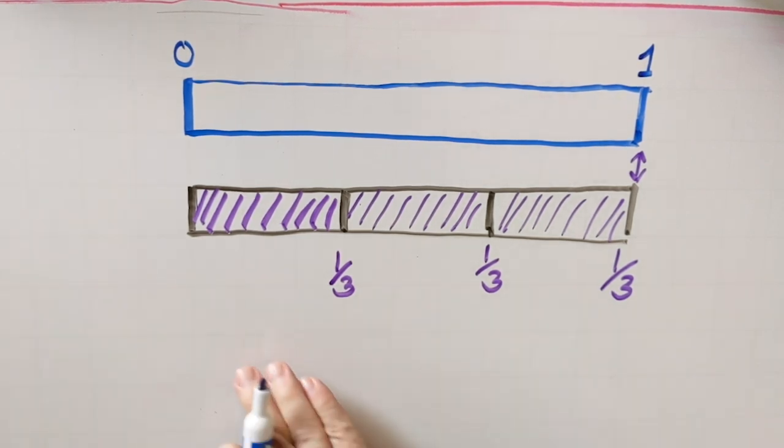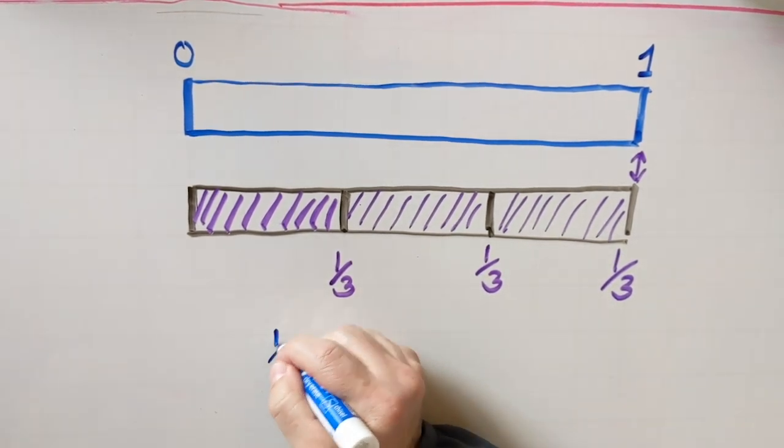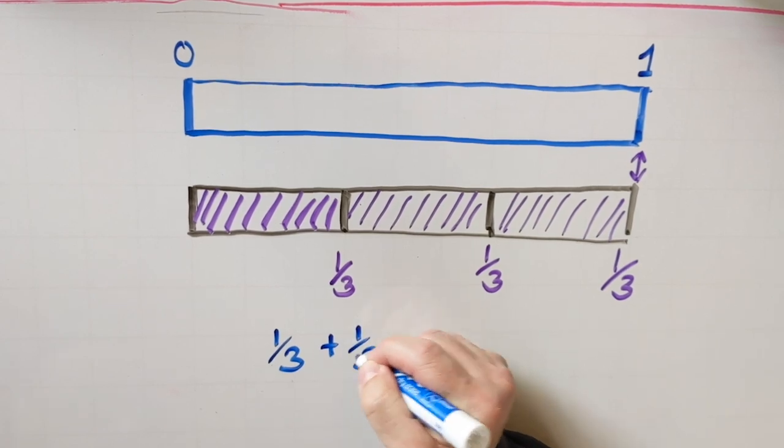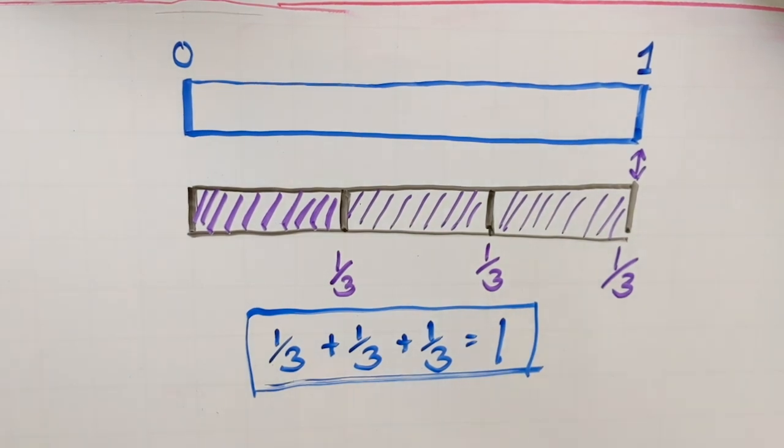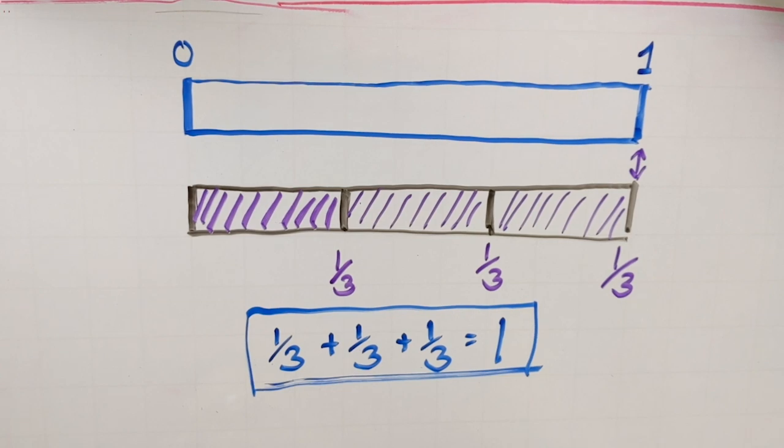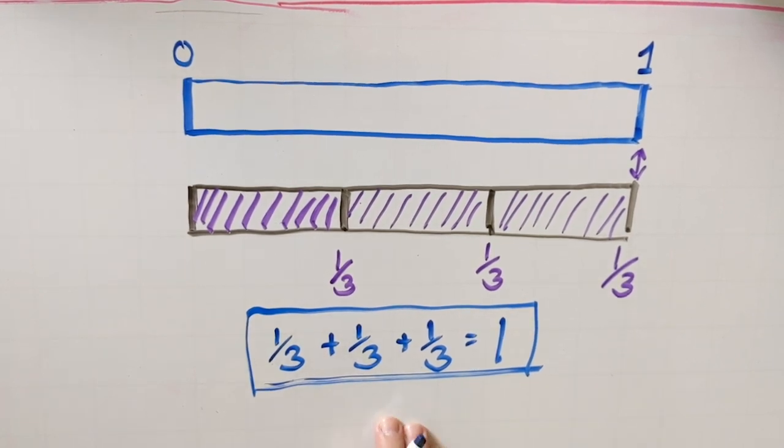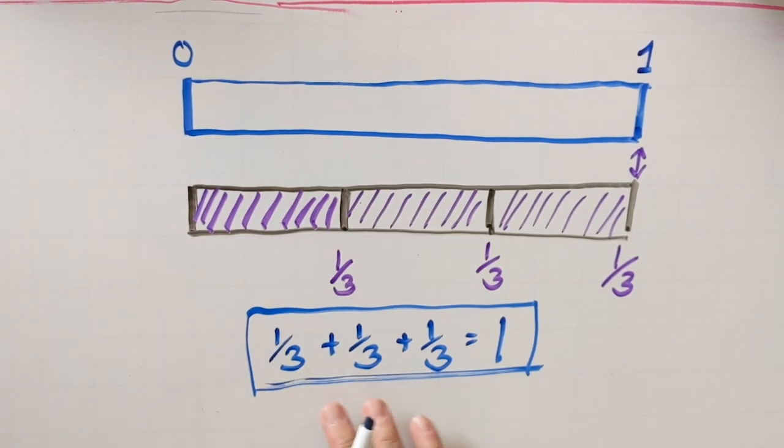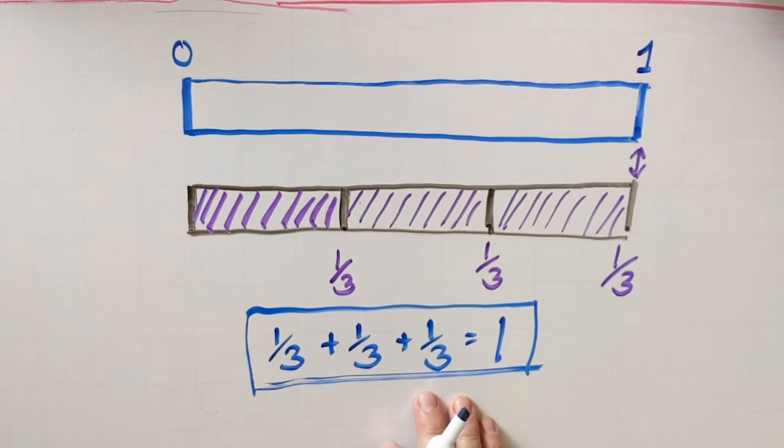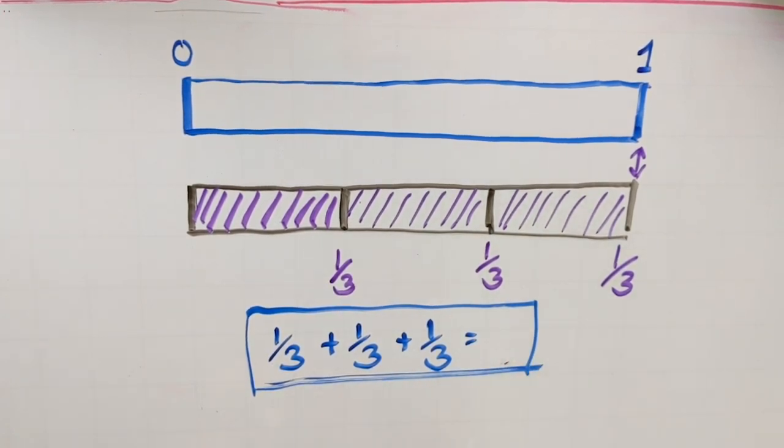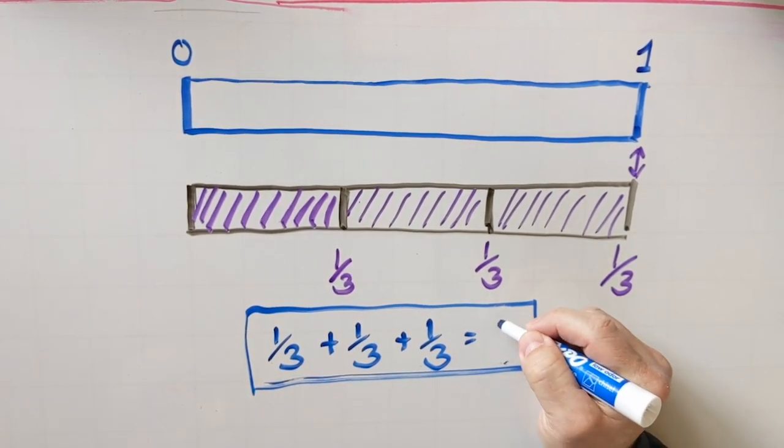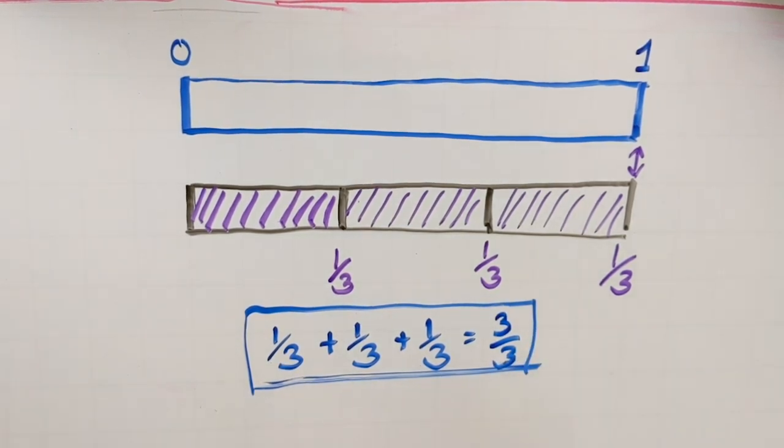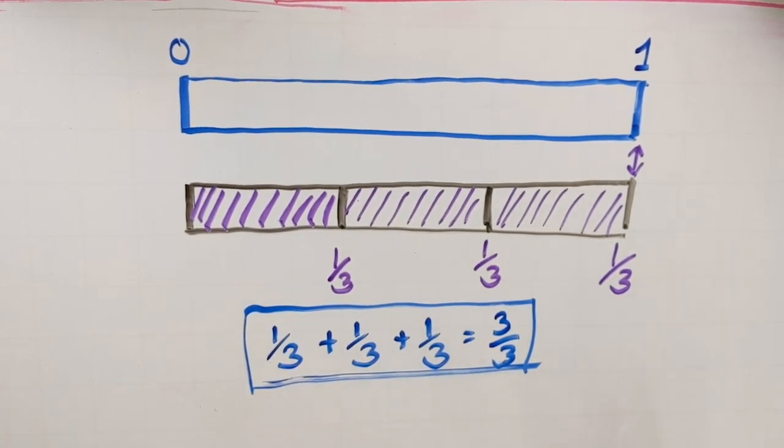How could we write this math problem to show that these three things equal one? Think about that for a quick sec. What math problem would show that these three things equal one? Maybe we wrote this. Maybe you thought about this. That seems to be a pretty good abstract or mathematical representation or an equation that represents what our diagram is shown here. Is there a simpler way that we can show this? Do you know another amount that is equal to one third plus one third plus one third? Or if we erase the one here, what's another thing that we could put there? You might think back and remember that, oh, well, that's three thirds. One third and one third and one third is three thirds in the same way that one apple plus one apple plus one apple equals three apples.